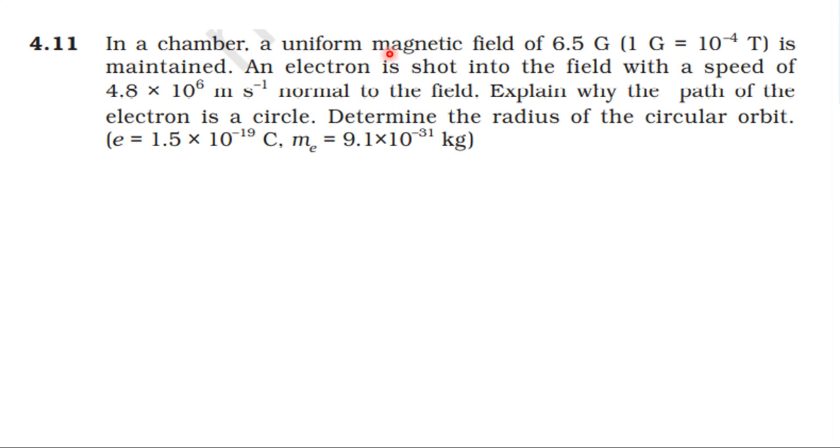In a chamber, a uniform magnetic field of 6.5 gauss, 1 gauss equal to 10 power minus 4 tesla, is maintained. An electron is shot into the field with a speed of 4.8 into 10 power 6 meter per second, normal to the field. Explain why the path of the electron is a circle. Determine the radius of the circular orbit.